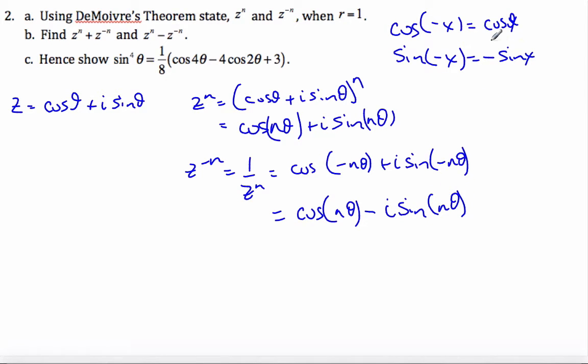And so this is minus i sine negative theta. If you're not sure of these, think about your unit circle and find out where they are on a unit circle and see if you can derive them yourself. So that is part A done.